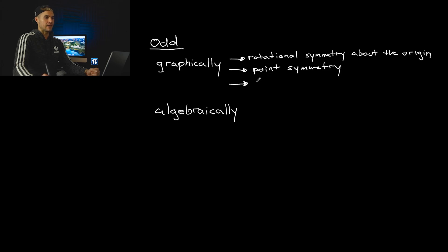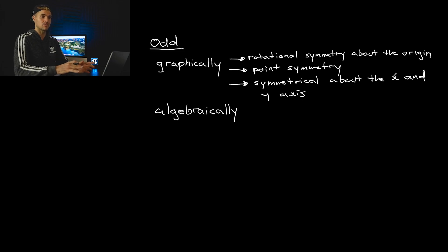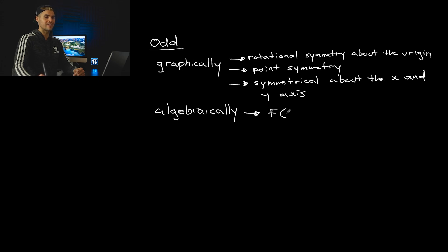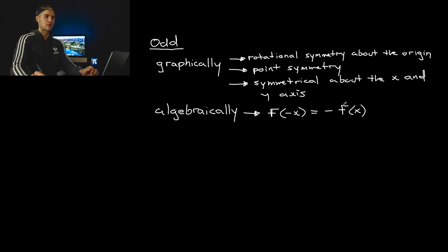The way I like to look at odd functions graphically is that they are symmetrical about both the x and y axes. Even functions were only symmetrical about the y-axis, whereas odd functions are symmetrical about both axes. Algebraically, we have to show that f of negative x equals negative f of x — meaning whatever the function is, we multiply it by negative one. If we can show that plugging in negative x for all x values gives negative f of x, then we've algebraically shown we're dealing with an odd function.